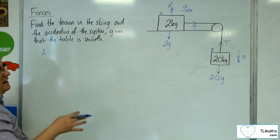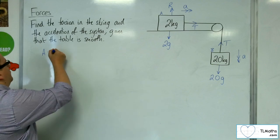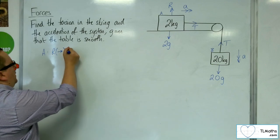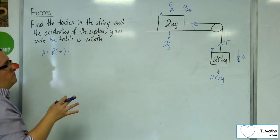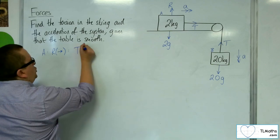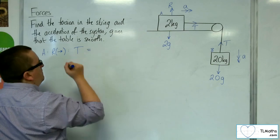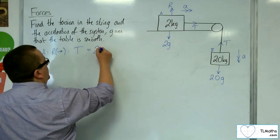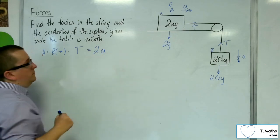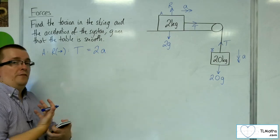What I'm interested in is resolving it horizontally. I'm going to take to the right as positive, because that's the direction of motion. So I've got the tension working towards the right, and that's got to be equal to the mass 2 times the acceleration a. So that's my first equation.